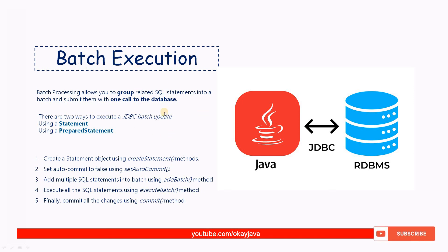Batch execution can be achieved either by using the Statement object or by using the PreparedStatement object — we'll cover each one in this video. The basic flow is: first, create a Statement object using createStatement; then set auto-commit to false; add multiple SQL statements to the batch using addBatch; execute all statements using executeBatch; and finally commit all changes to the database by calling commit.